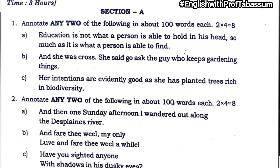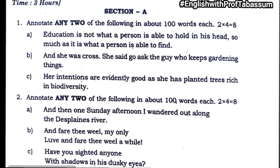'And she was cross, she said go ask the guy who keeps gardening things.' This annotation is taken from the prose lesson 'Father Dear Father.' 'Her intentions are evidently good as she has planted trees rich in biodiversity.' This annotation is taken from 'The Green Champion Thimakka.'